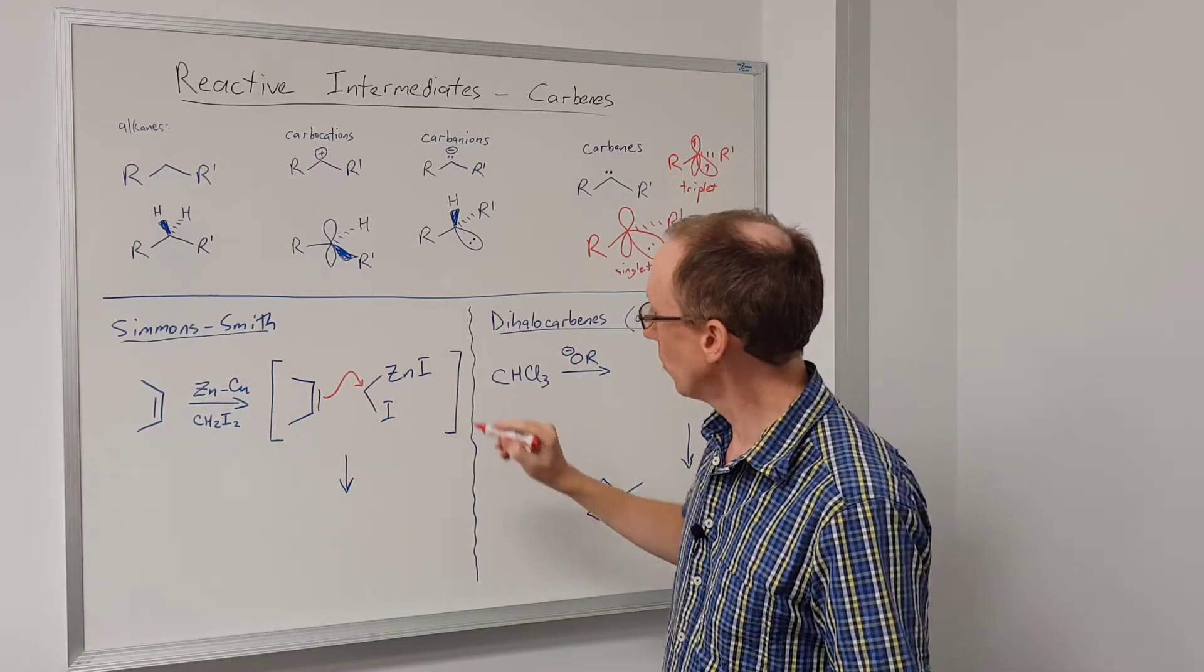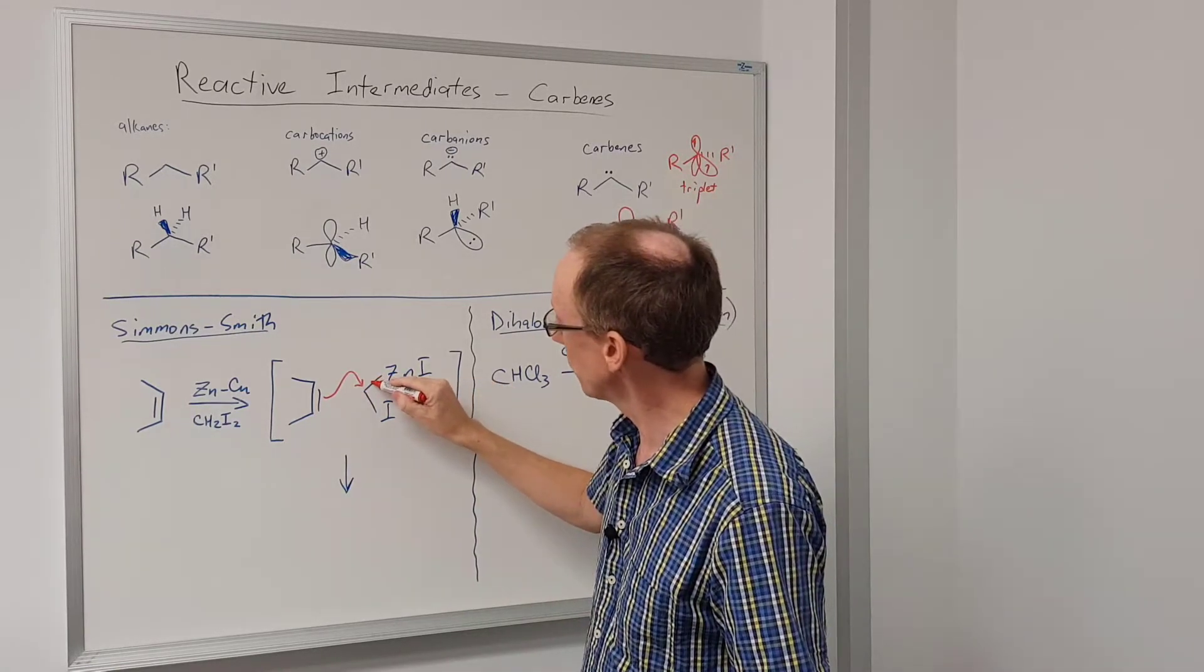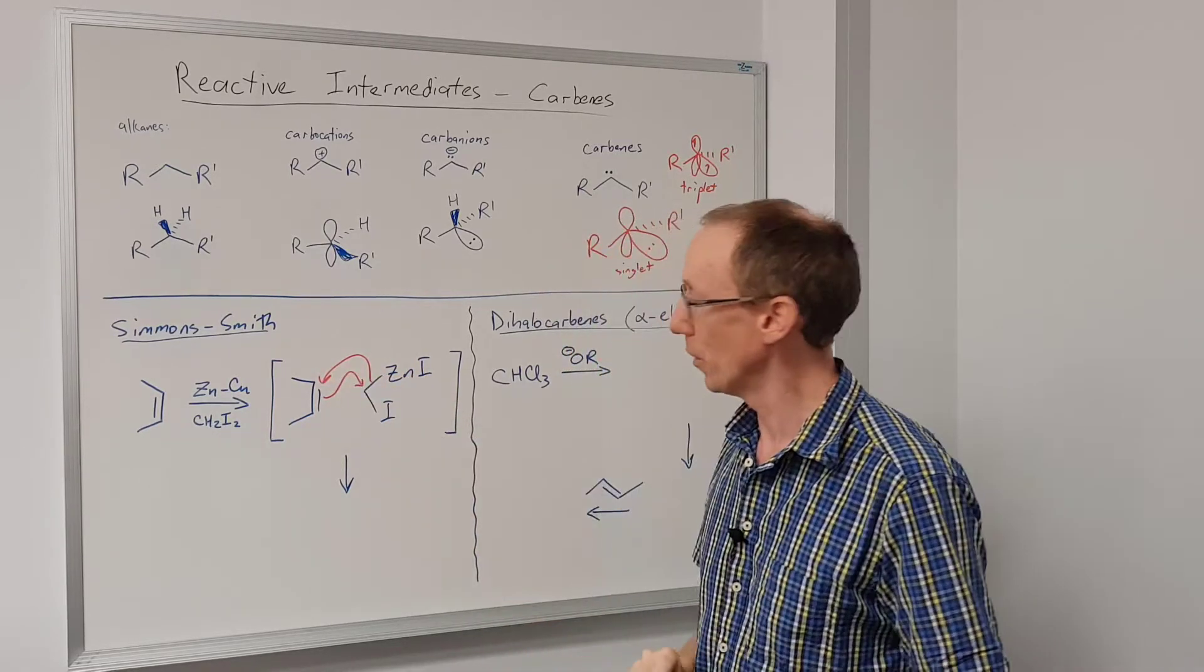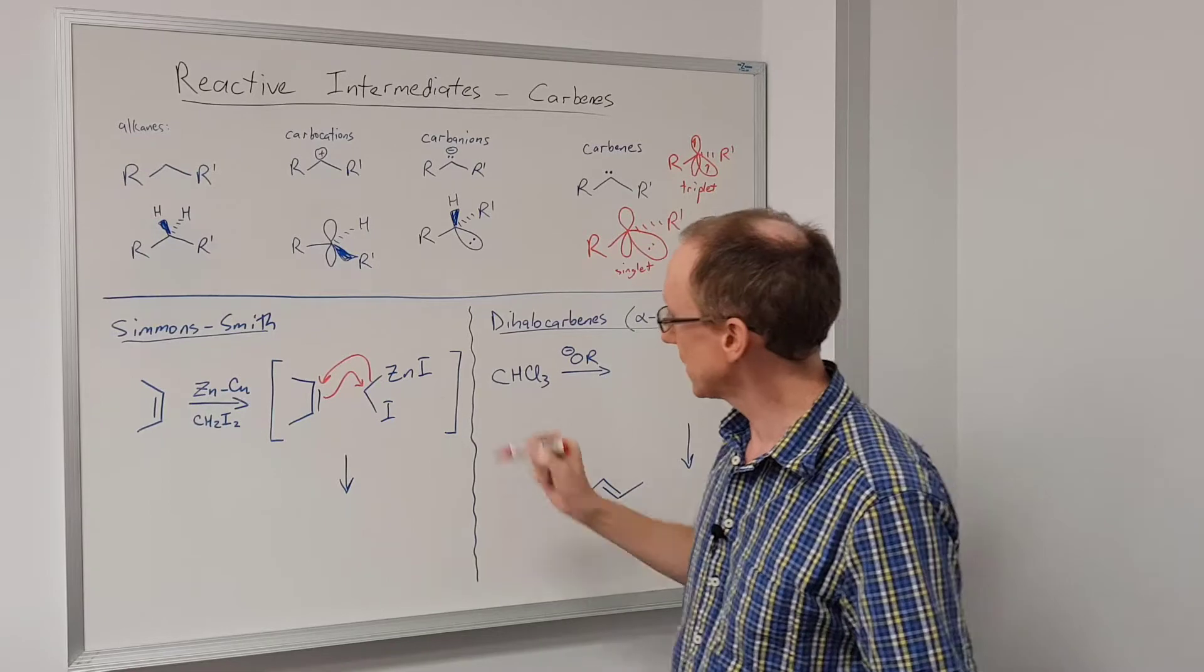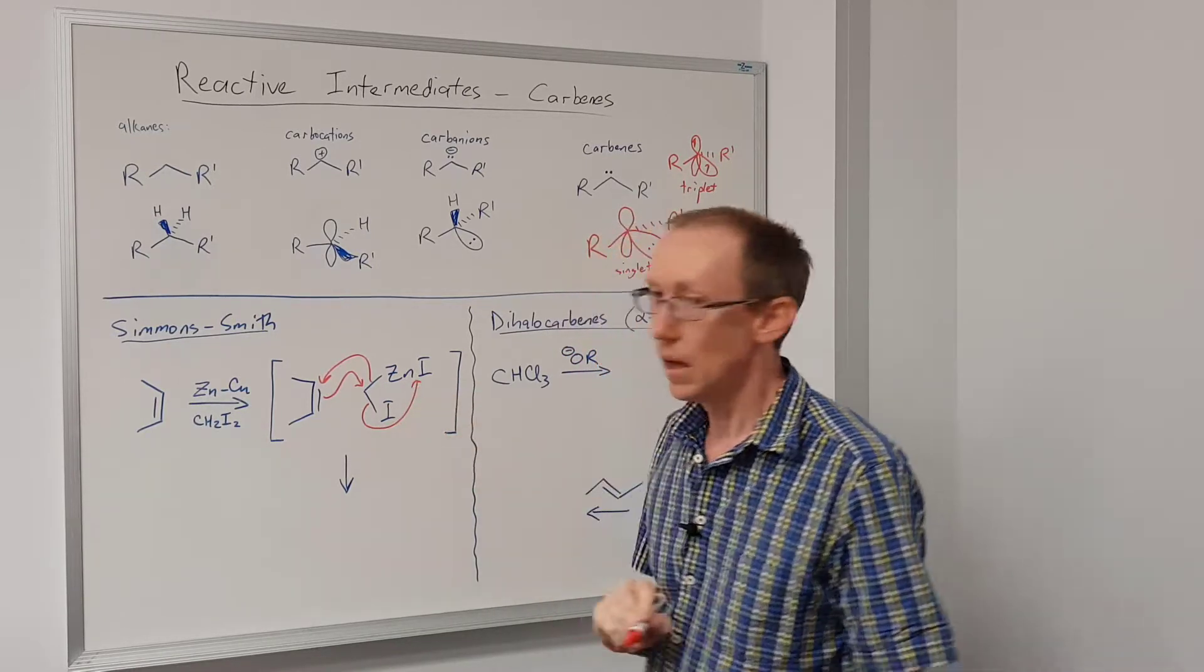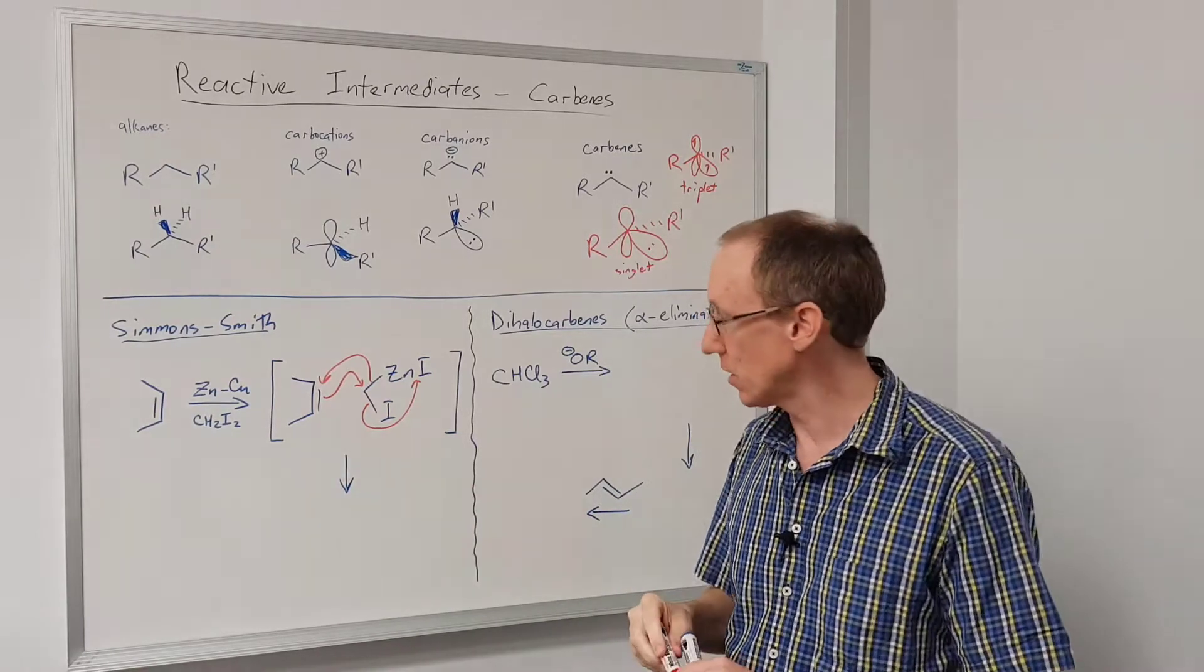We can take a pair of electrons from this alkene and make it attack that carbon, but we can also make a pair of electrons from this bond attack this double bond as well. At the same time we can make this iodide leave, and so we generate zinc iodide.